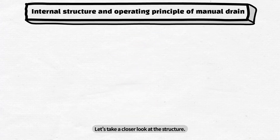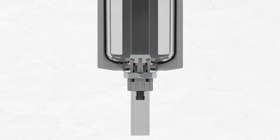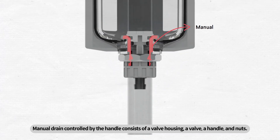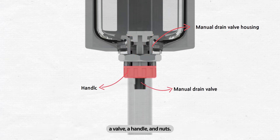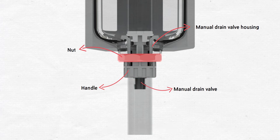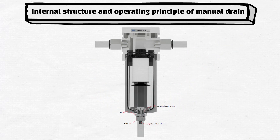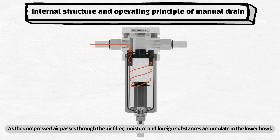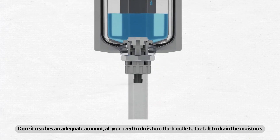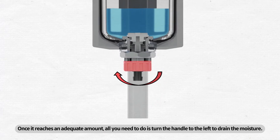Let's take a closer look at the structure. Manual drain controlled by the handle consists of a valve housing, a valve, a handle, and nuts. I'm going to show you how these components work one by one. As the compressed air passes through the air filter, moisture and foreign substances accumulate in the lower bowl. Once it reaches an adequate amount, all you need to do is turn the handle to the left to drain the moisture.